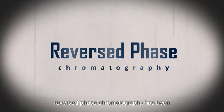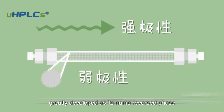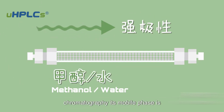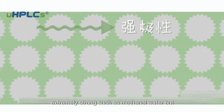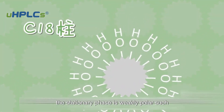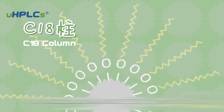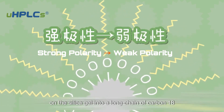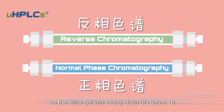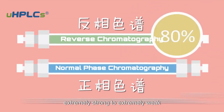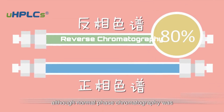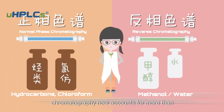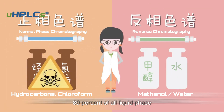After chemists became accustomed to the chemical bonding technology of silica gel, reversed phase chromatography has been greatly developed. As its name implies, reversed phase chromatography is the reverse of normal phase chromatography. Its mobile phase is strongly polar, such as methanol-water, but the stationary phase is weakly polar, such as an octadecyl silica gel column, also called a C18 column. It converts the original silanol groups on the silica gel into long C18 carbon chains, changing the silica surface from strongly polar to weakly polar. Although normal phase chromatography was invented first, it is not widely used. The application of reversed phase chromatography now accounts for more than 80% of all liquid chromatography applications.